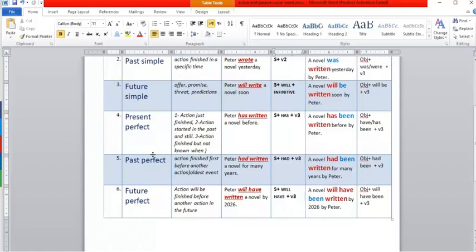For past perfect: an action finished first before another action. We call it the oldest event. 'Peter had written a novel for many years'—this is the main action that just finished a long time ago. Subject plus had plus verb 3. To make it passive voice, start with object, then had, then been plus verb 3: 'A novel had been written for many years by Peter.'